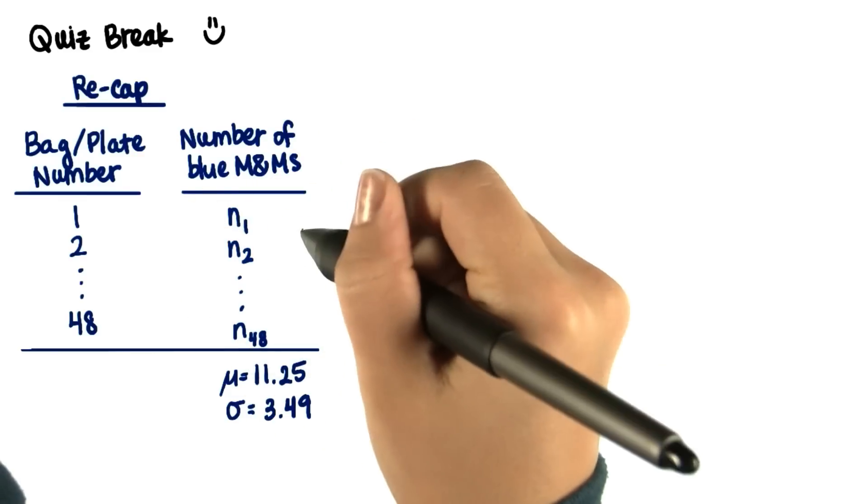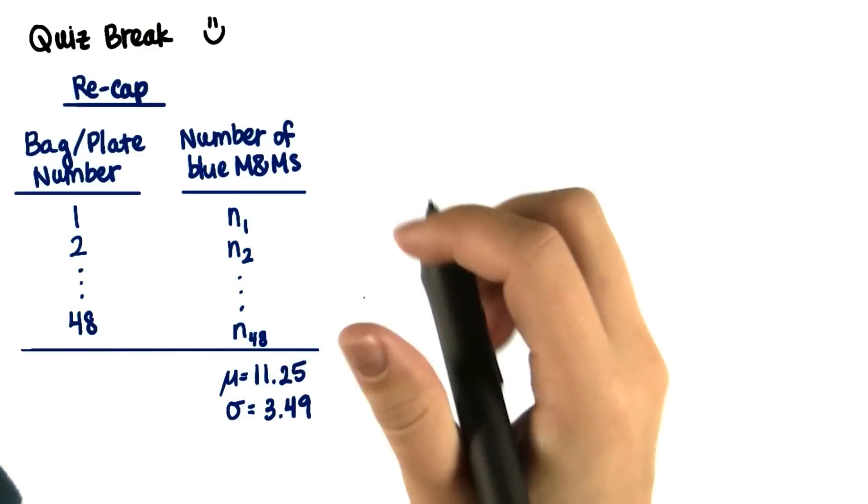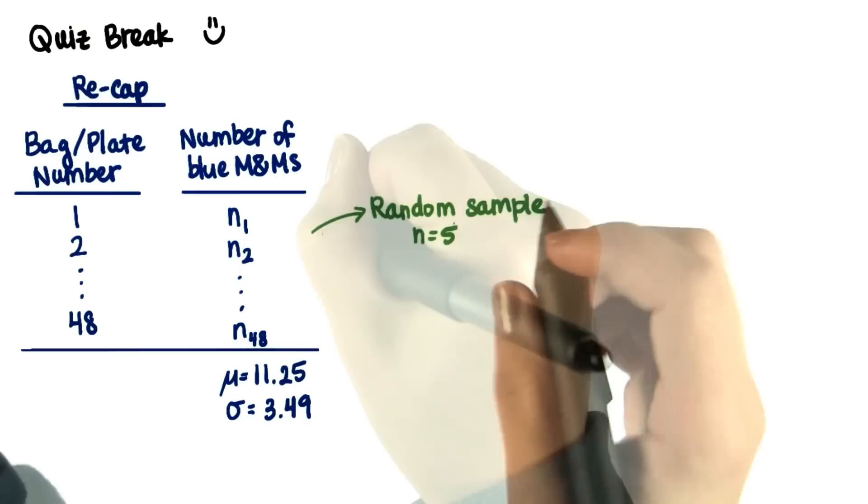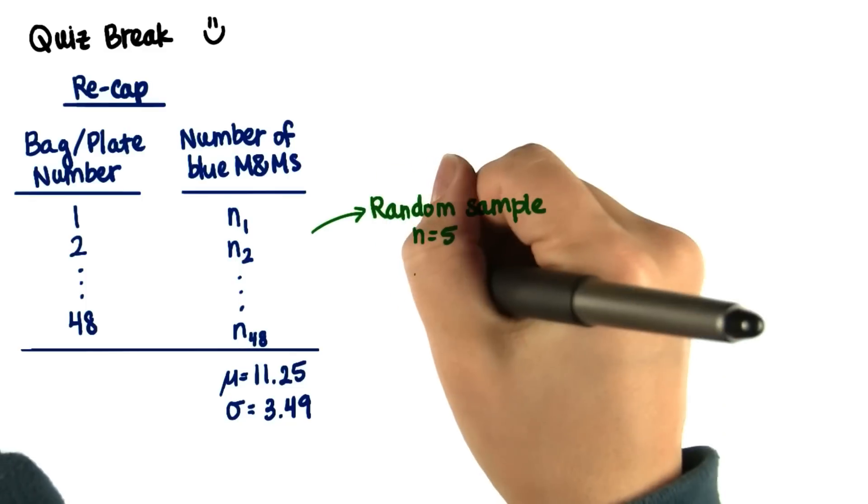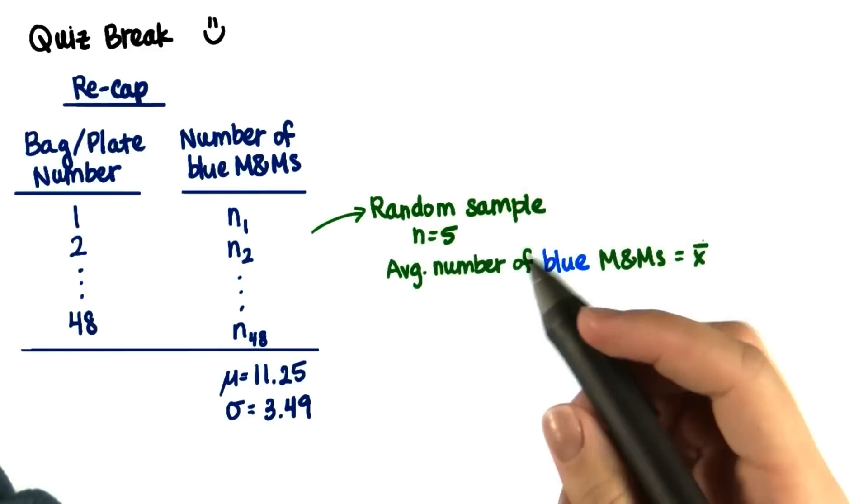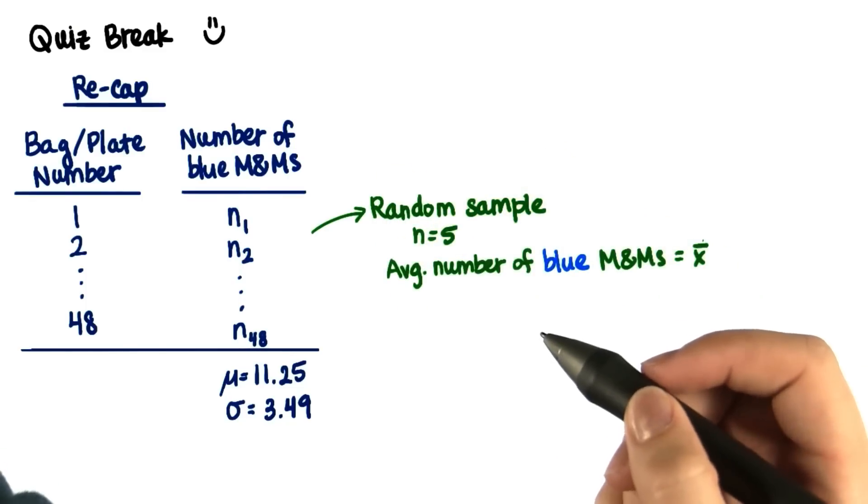From this population, Professors Laraway and Rogers randomly selected 5 plates. Then they counted the number of blue M&Ms, divided by 5, and got the average number of blue M&Ms. And then they did this 50 times.